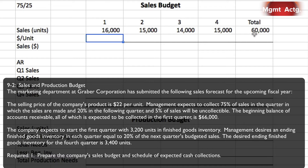Management expects to collect 75% of sales in the quarter in which the sales are made, 20% in the following quarter, and 5% of sales are expected to be uncollectable. The beginning balance of accounts receivable — all of which is expected to be collected in the first quarter — is $66,000.